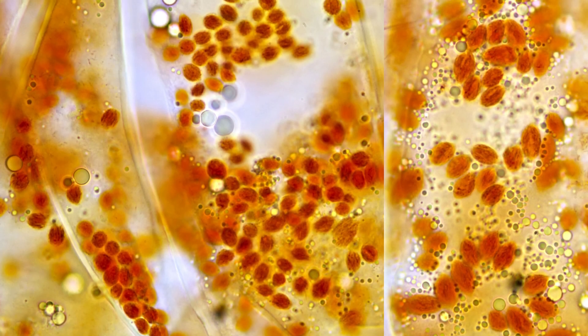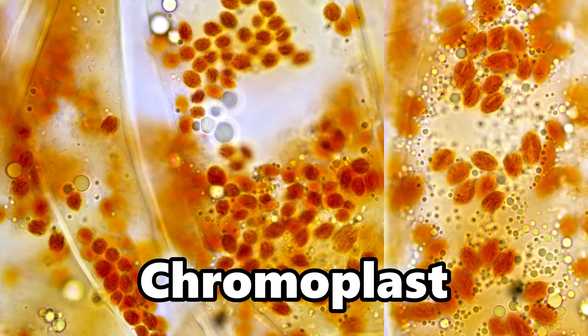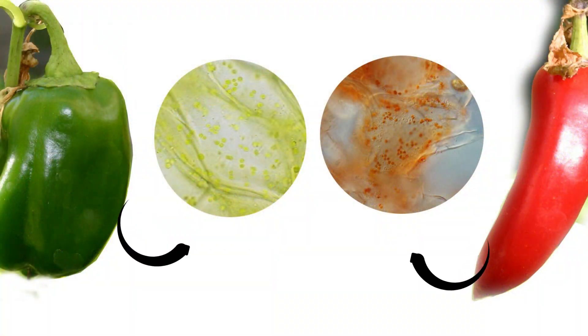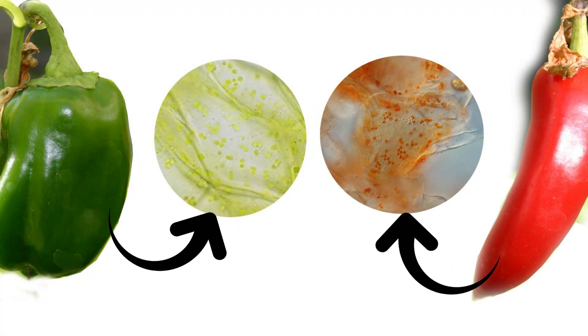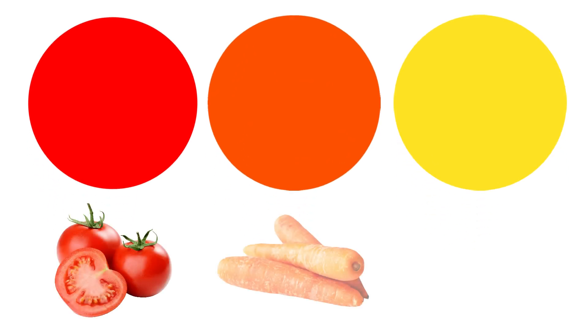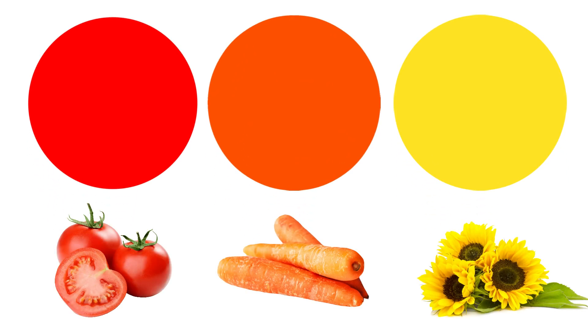Another type of Plastid is the chromoplast. Chromoplasts are responsible for the vibrant colors we see in fruits and flowers. They contain pigments like carotenoids, which give rise to the reds, oranges, and yellows we associate with ripe tomatoes, carrots, and sunflowers.